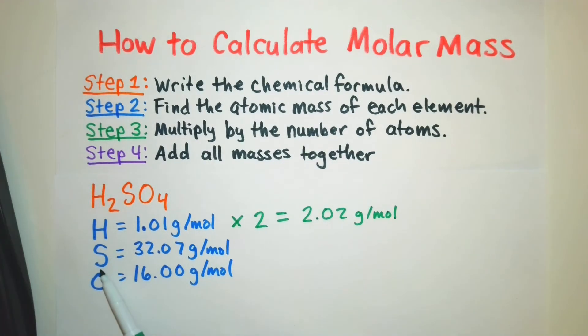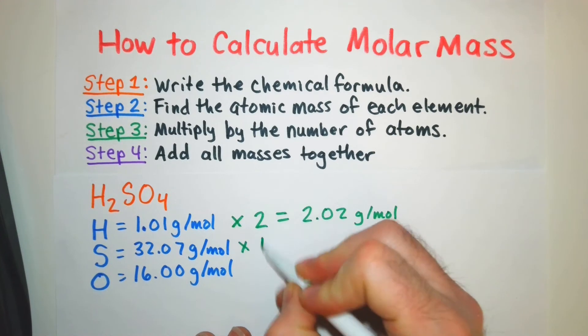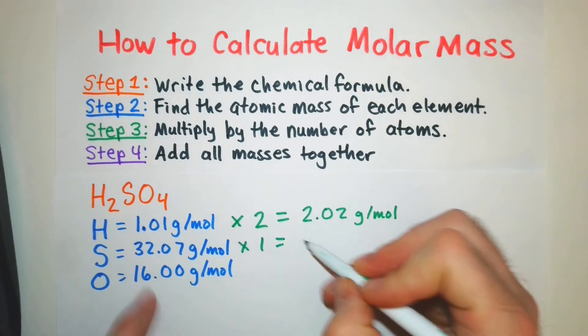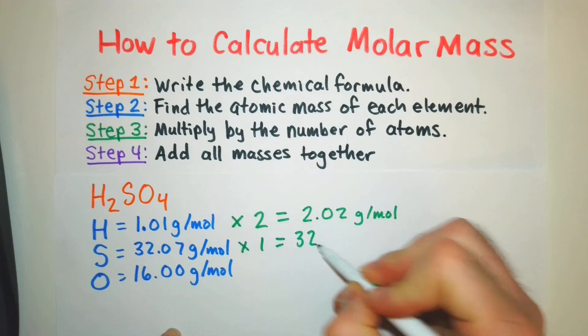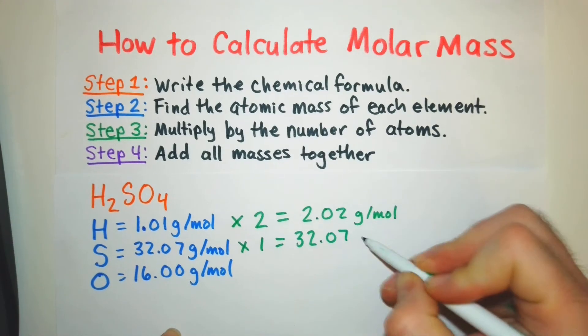All right for our sulfur we do not have a subscript after sulfur so that means there's only one so we're just going to multiply times one. Any number times one is that same number so 32.07 grams per mole.